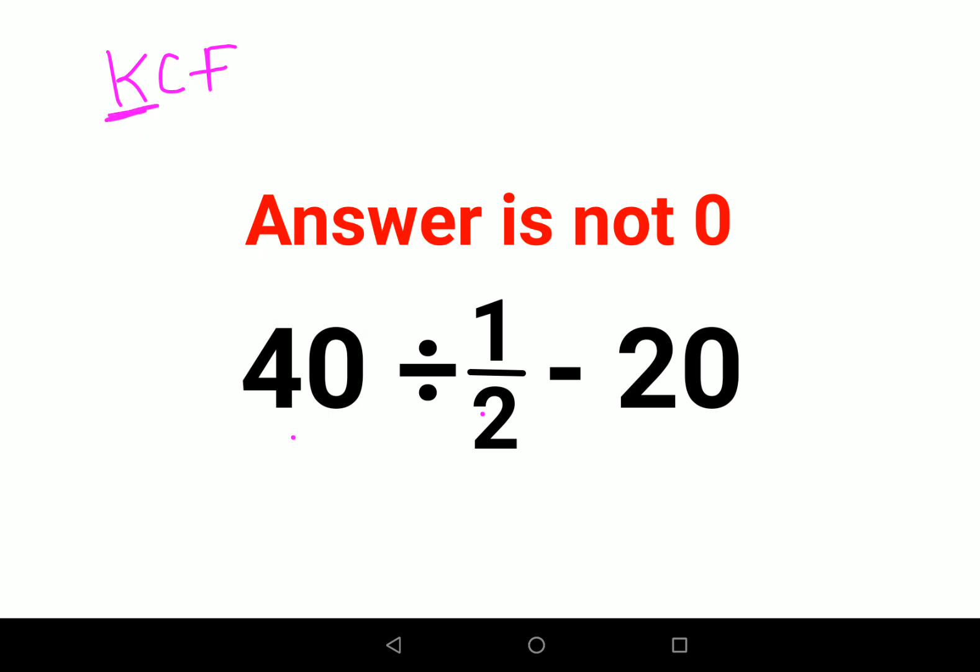Now K in KCF stands for keeping the first number as it is. So we will keep 40 as it is. C stands for changing. You change your division sign to multiplication. And F stands for flipping. So you will take reciprocal of 1 upon 2, which is 2.